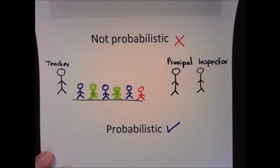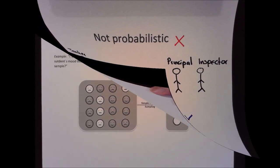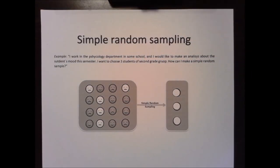Now let's see what are the four techniques to make a sampling. The first probabilistic sampling method is simple random sampling.